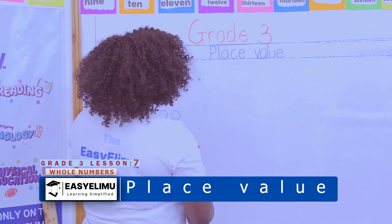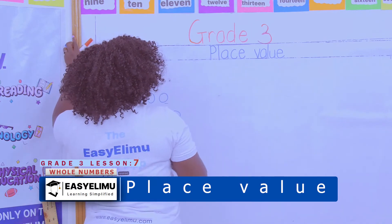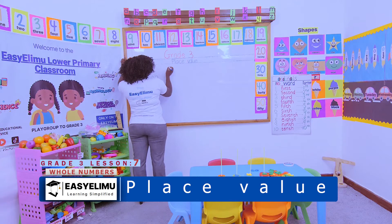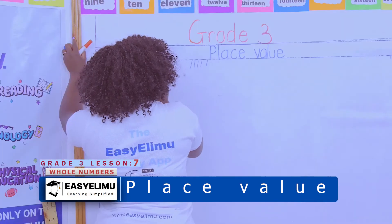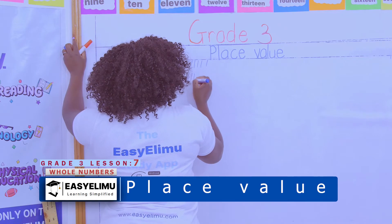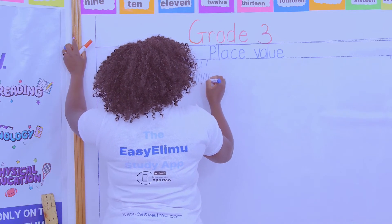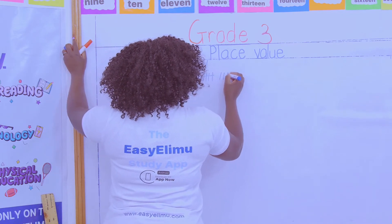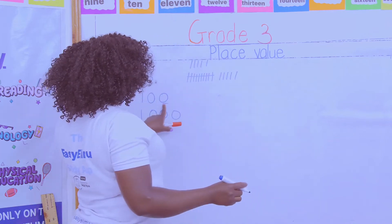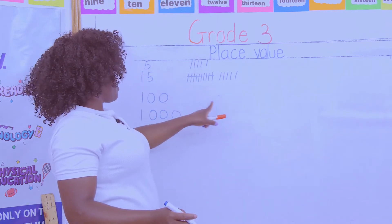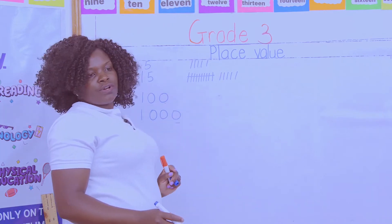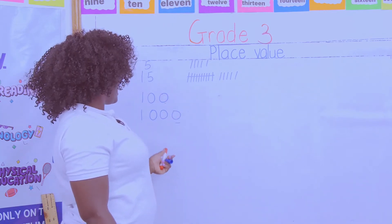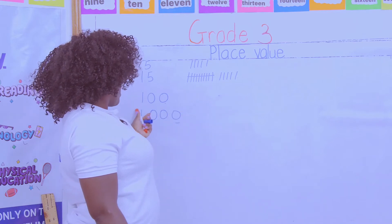If I'm told to represent this number using a place value stick, I'll just draw 4 or 5. If I'm told to represent this using a place value stick, I'll draw all the way — how many bundles of 10 sticks? I'll draw 10 bundles of 10 sticks. Now I am here on 1,000.